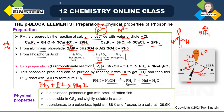Physical properties of phosphine: it is a colorless, poisonous gas with a smell like rotten fish. It is better soluble in CS2 than in water (only slightly soluble in water). Under normal conditions it is gaseous; it condenses to colorless liquid at about 188 K (boiling point) and solidifies at 139.5 K (melting point).